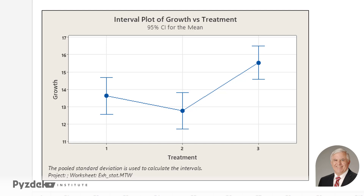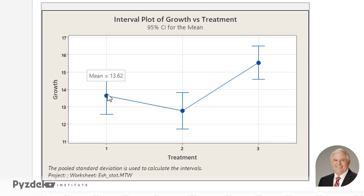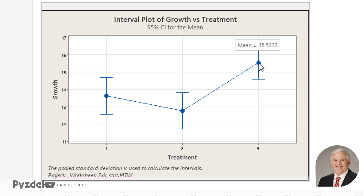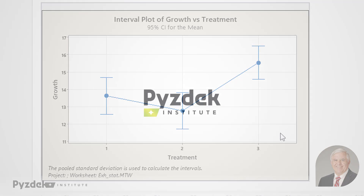We also get an interval plot, which shows the average for each treatment level and a 95% confidence interval around that average. We can see graphically that treatments one and two are relatively close to one another, but treatment three is in a group all by itself. Minitab gives us information that would be rather challenging to get without statistics software like a spreadsheet.